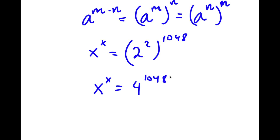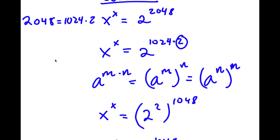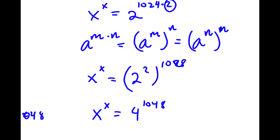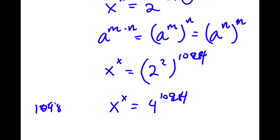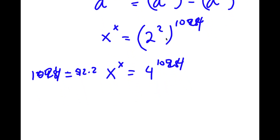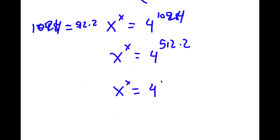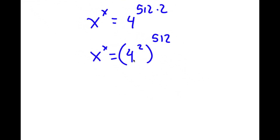Now I'm going to repeat the same thing again. 4 to the power of 1024 — 1024 is equal to 512 times 2. So now I have x to the power of x is equal to 4 to the power of 512 times 2. I'm going to rewrite that as 4 to the power of 2 to the power of 512. Now 4 to the power of 2 is obviously 16. So now I have x to the power of x is equal to 16 to the power of 512.